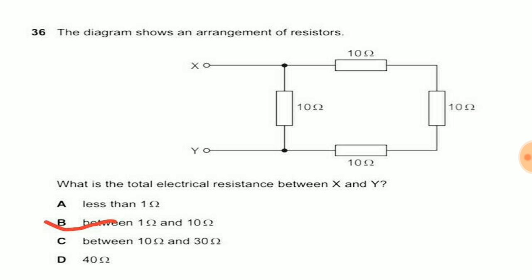Our option choice first is less than 1, which is wrong choice. Option choice B is between 1 and 10. Our answer was 7.5, so B is the right answer. If you see option C, between 10 and 30, that is wrong one. And if you see D, 40, that is also wrong choice.